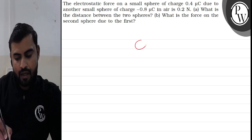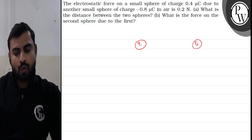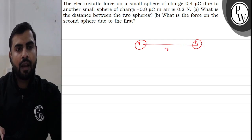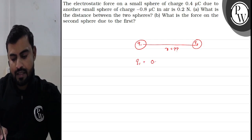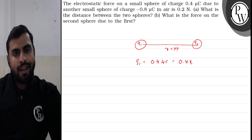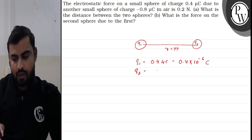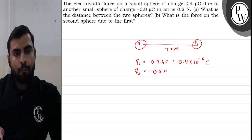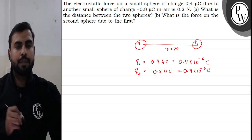We have two charges. The first charge is Q1 and the second charge is Q2. We have to find the distance between the two charges — the value of R. The first charge Q1 is given as 0.4 microcoulomb, which means we can write it as 0.4 into 10 to the power minus 6 coulomb. Q2 is given as minus 0.8 microcoulomb, which means we can write it as minus 0.8 into 10 to the power minus 6 coulomb.